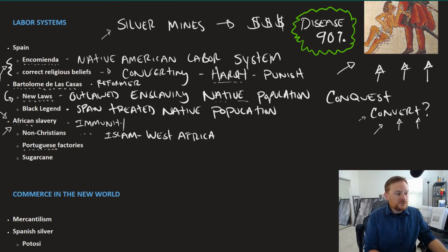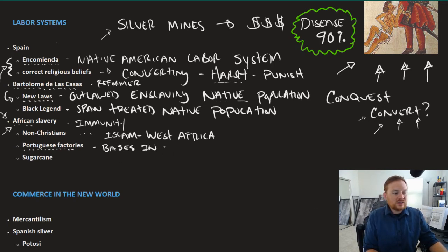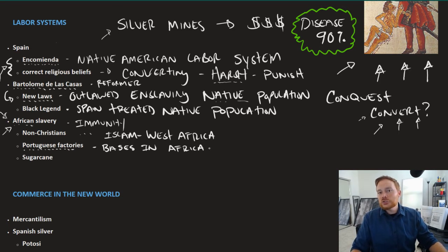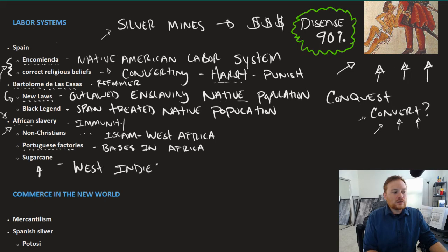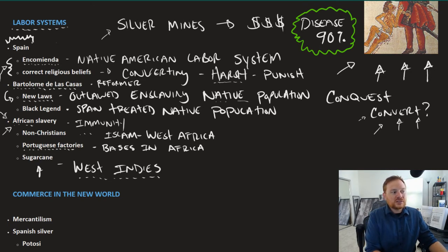The Portuguese had factories — bases in Africa — where the Portuguese and later the Dutch would trade with local African lords and chieftains for slaves. Many of those slaves would make their way to the New World to grow sugarcane, most likely in places like the West Indies. It's important to note that the English, Dutch, French, and Portuguese all had sugar plantations. But in the case of Spain, the labor system went from Encomienda to permanent African slavery.